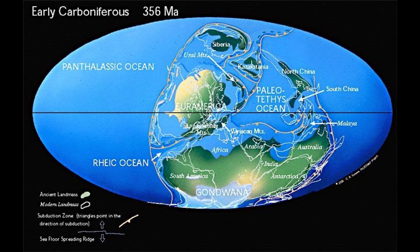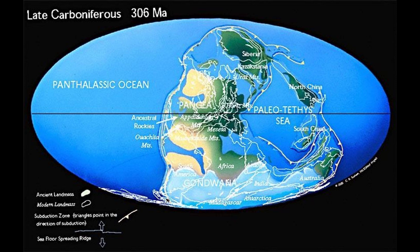An ice cap grew at the South Pole as four-legged vertebrates evolved in the coal swamps near the equator. By the late Carboniferous, the continents that make up modern North America and Europe had collided with the southern continents of Gondwana to form the western half of Pangaea. Ice covered much of the southern hemisphere and vast coal swamps formed along the equator.